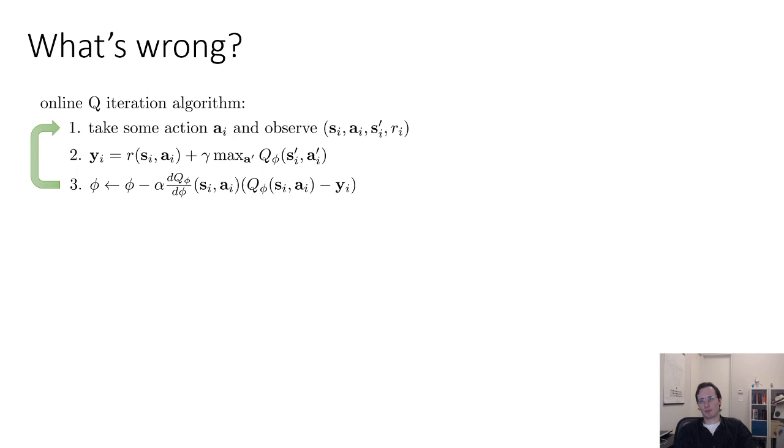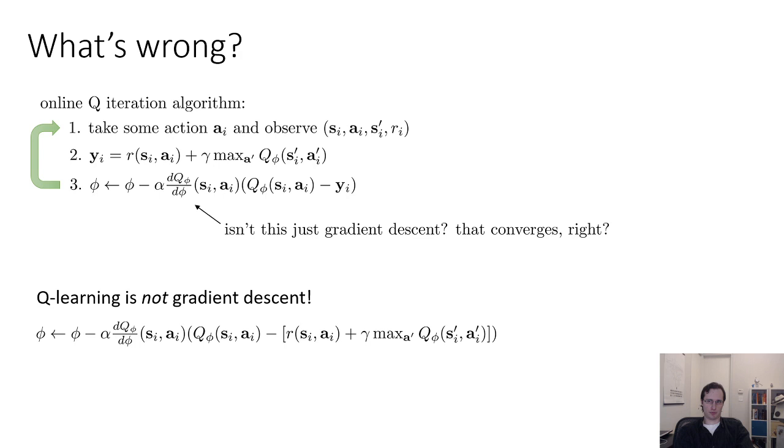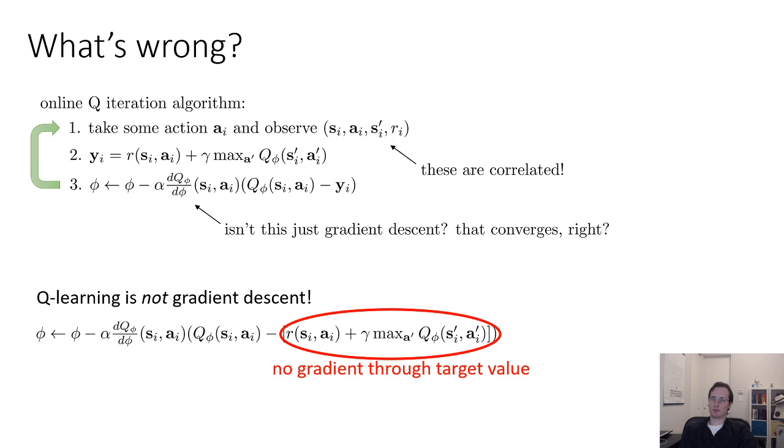What else can go wrong with the basic Q-learning algorithm? One big problem is that in step three, we're taking gradient descent steps, stochastic gradient descent steps. We might think that this will just converge. Unfortunately, Q-learning is not gradient descent. Remember that the target value y itself depends on the Q function. But when we compute the gradient in step three, we ignore this, we're treating y as a constant. So for that reason, Q-learning is not quite regular gradient descent, which means it's not quite so easy to get it to work well.